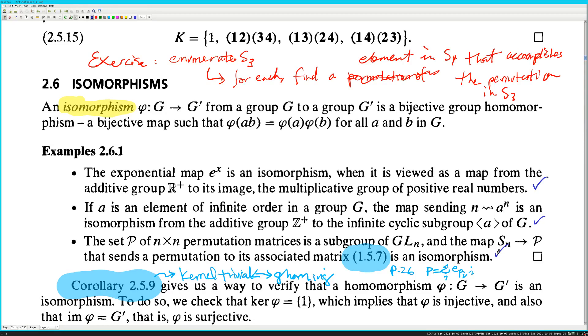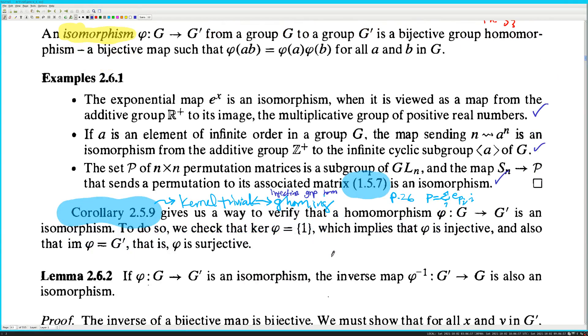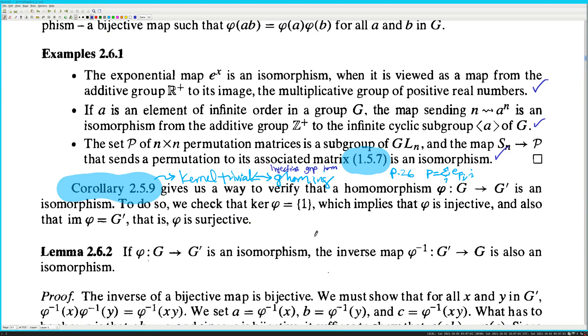The set P of N by N permutation matrices is a subgroup of GLN. In the map SN to P that sends a permutation to its associated matrix. We know what the permutation matrices are. Is an isomorphism? Okay, sure. Corollary 259. This is abstract algebra 26, by the way. So this is a kernel is trivial if and only if it is a group homomorphism that is injective. So, G-H-H-M-E-N-G, this means injective group homomorphism.